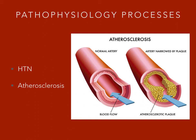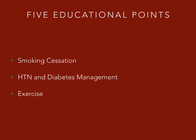Both conditions can lead to heart disease, such as coronary artery disease and heart failure. Regarding the five educational points — the very first point is that if an elderly patient happens to smoke, advise them to stop smoking, because smoking damages your vessels within your body and can lead to many different problems, including aneurysms.